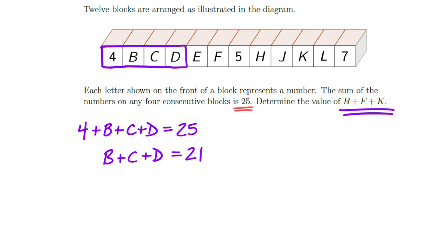Now, that doesn't get me very far. So maybe then I stumble the next part. And I say, well, it says that any four consecutive blocks have a sum of 25. So I could start to then write down that B plus C plus D plus E has to equal 25.